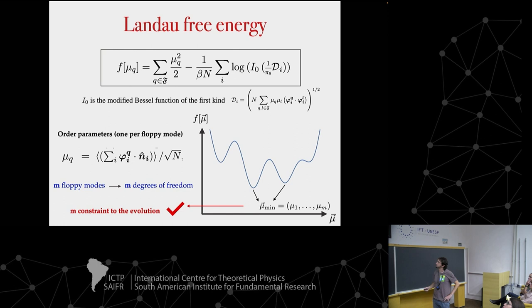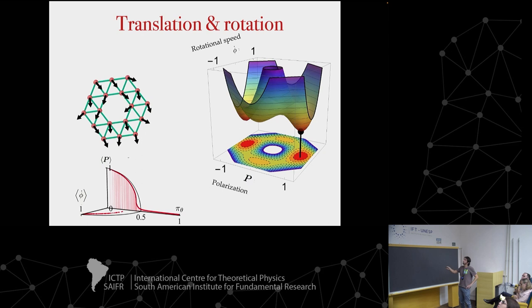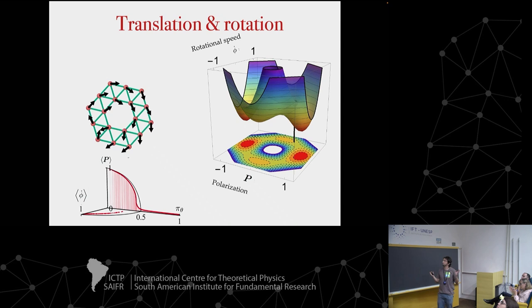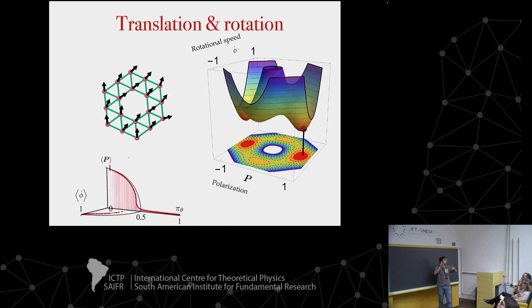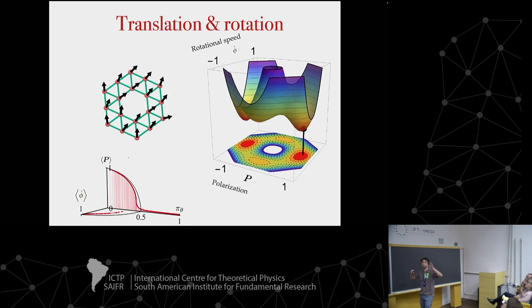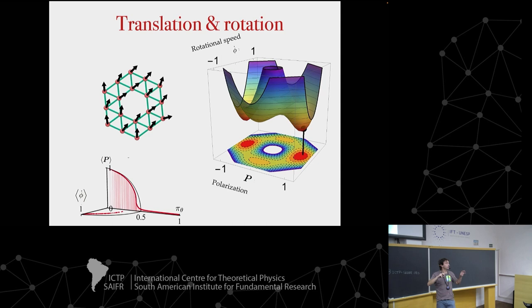In the simple case of translation and rotation, the Landau free energy depends only on polarization and rotation. We can see the system jumping from one minimum to the other when rotating or translating — it can break rotational symmetry in some cases and chiral symmetry in others, jumping between them depending on temperature.